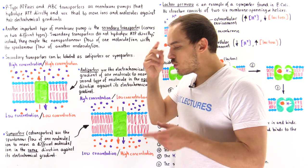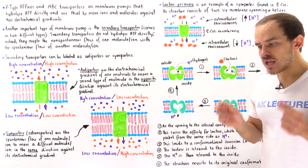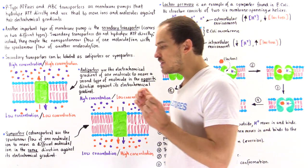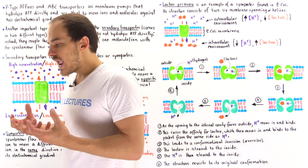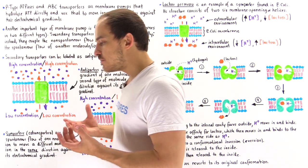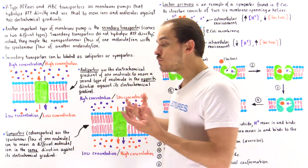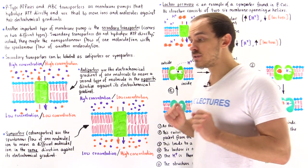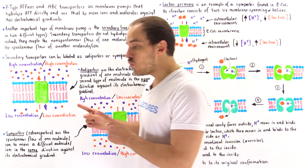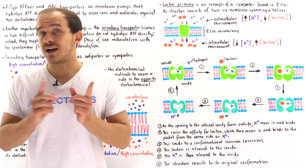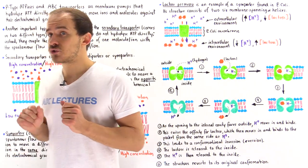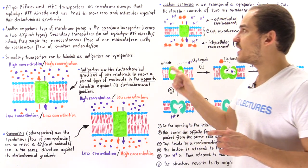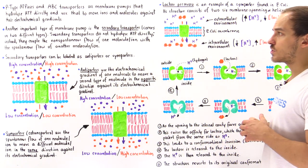Not all membrane pumps actually utilize ATP molecules directly. Membrane pumps that don't break down ATP directly yet are able to move molecules and ions against their electrochemical gradients are known as secondary transporters.